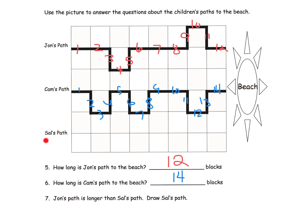The last one is John's path is longer than Sal's path, so we have to draw Sal's path. John's path is 12 and we need it to be longer than Sal's, so Sal's path has to be shorter than 12. A nice way to do that might be to just go straight over and boom, done. We can see that Sal's path is 1, 2, 3, 4, 5, 6, 7, 8. Sal's path is 8, that's less than 12.